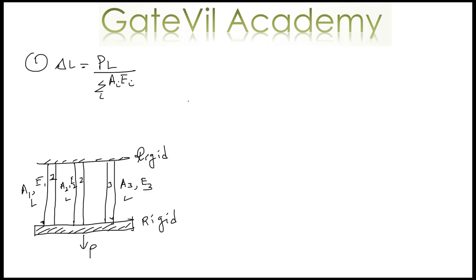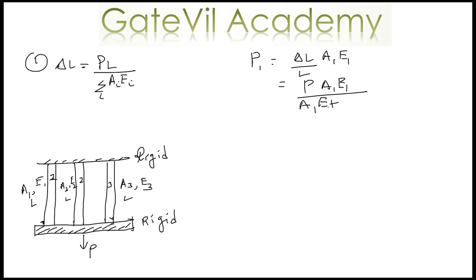Now let's see what load is taken by each bar. We know P1 was equal to (delta L / L) times A1 E1. By substituting the value of delta L, we get P1 equal to P times A1 E1 divided by (A1 E1 plus A2 E2 plus A3 E3). The L terms cancel out, giving us the load in bar one.